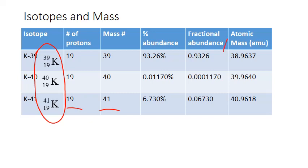The true mass in units of AMU is close to those numbers, but not quite. For example, the true mass of an atom of the potassium-39 isotope is actually 38.9637 AMU. We get similar patterns for potassium-40 and potassium-41.